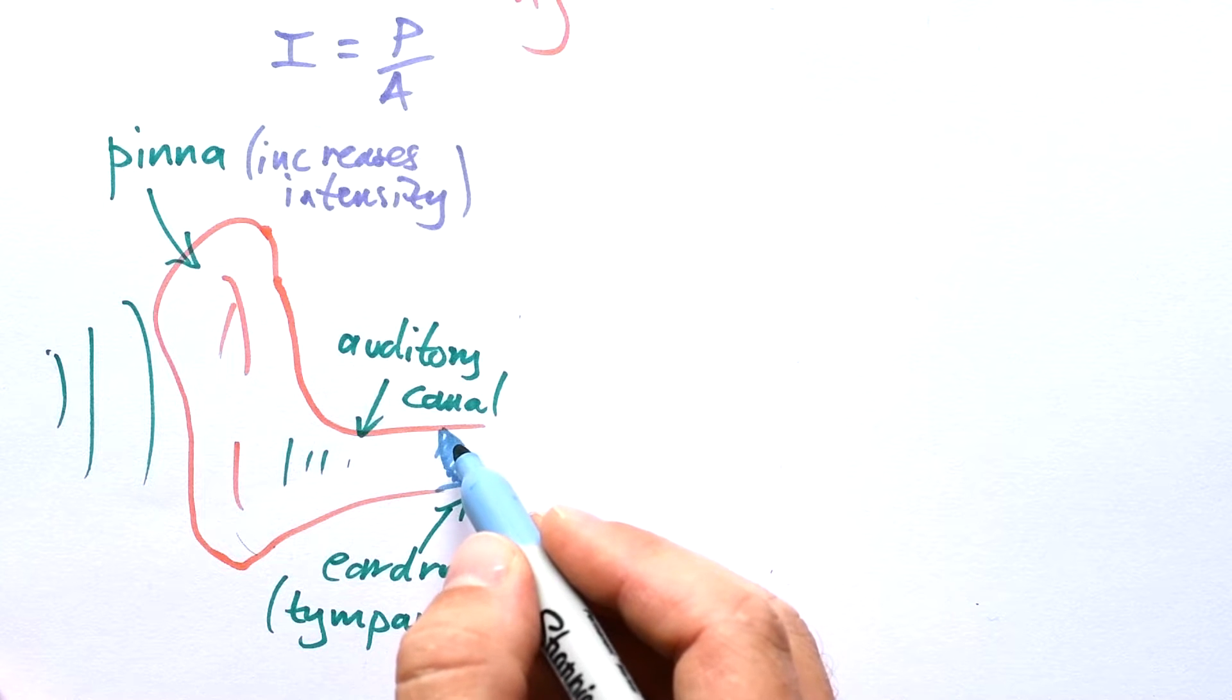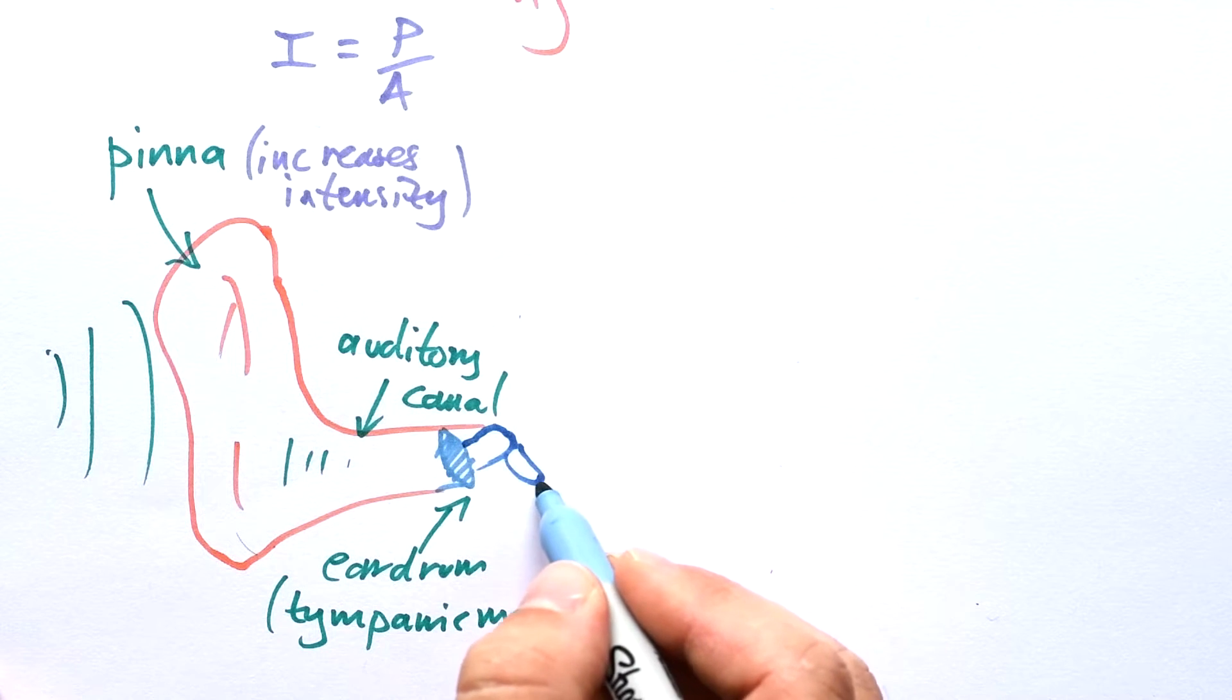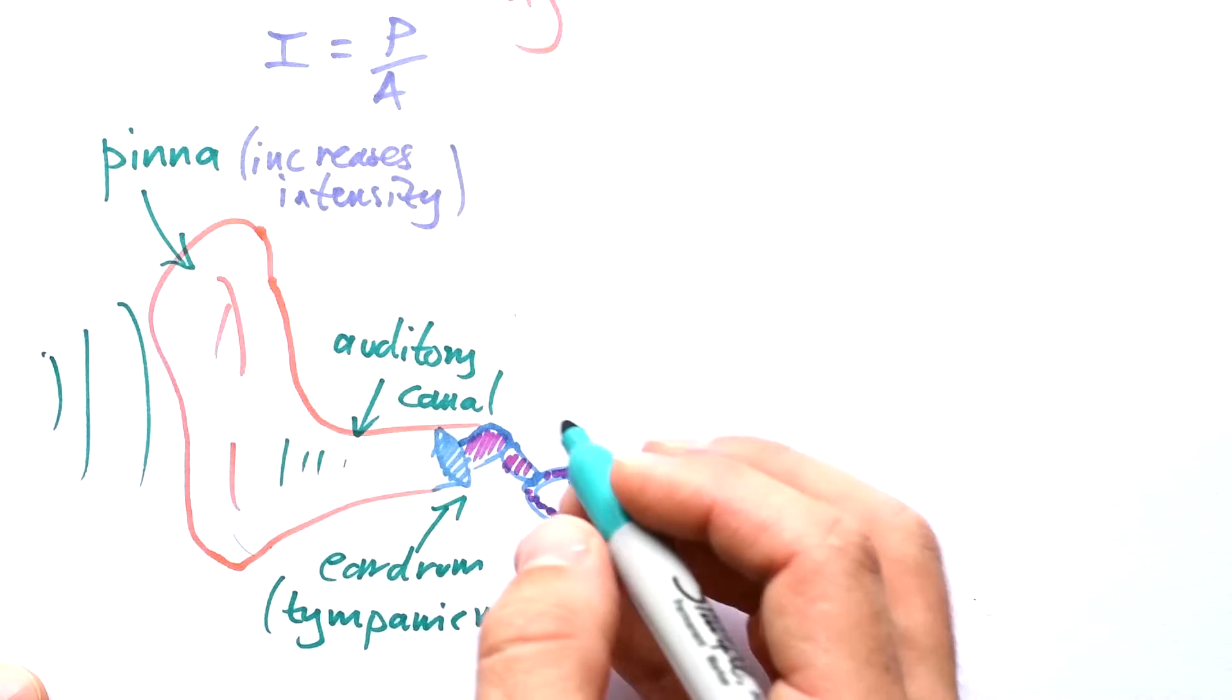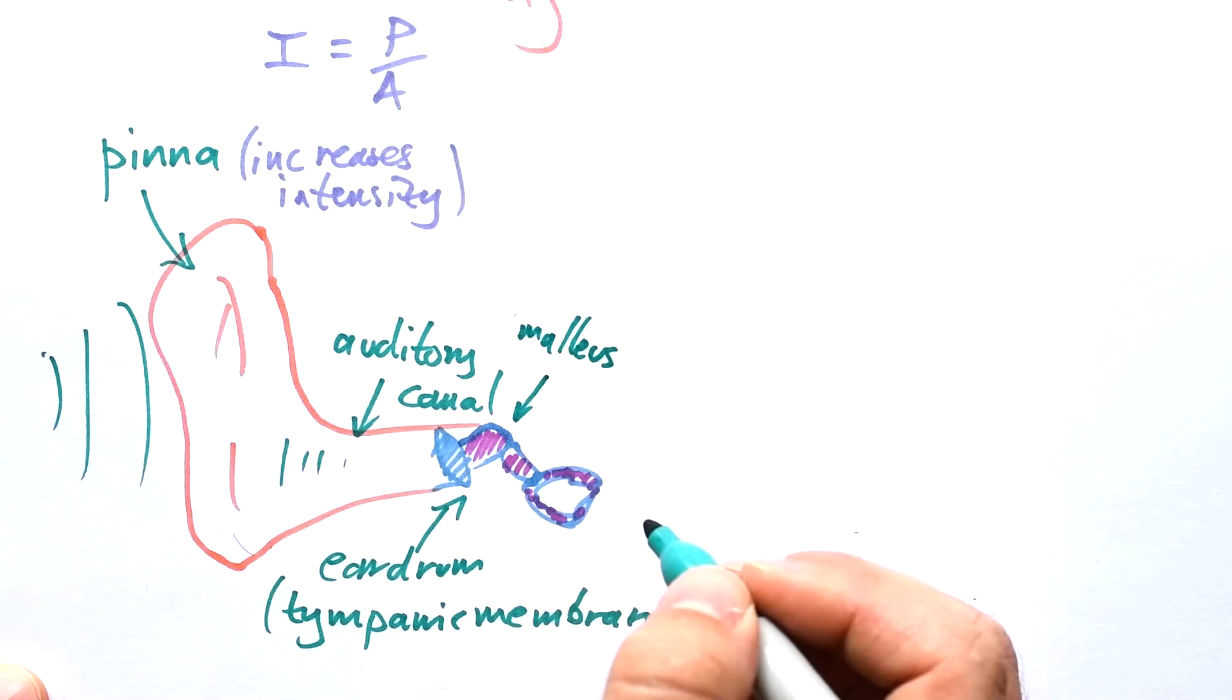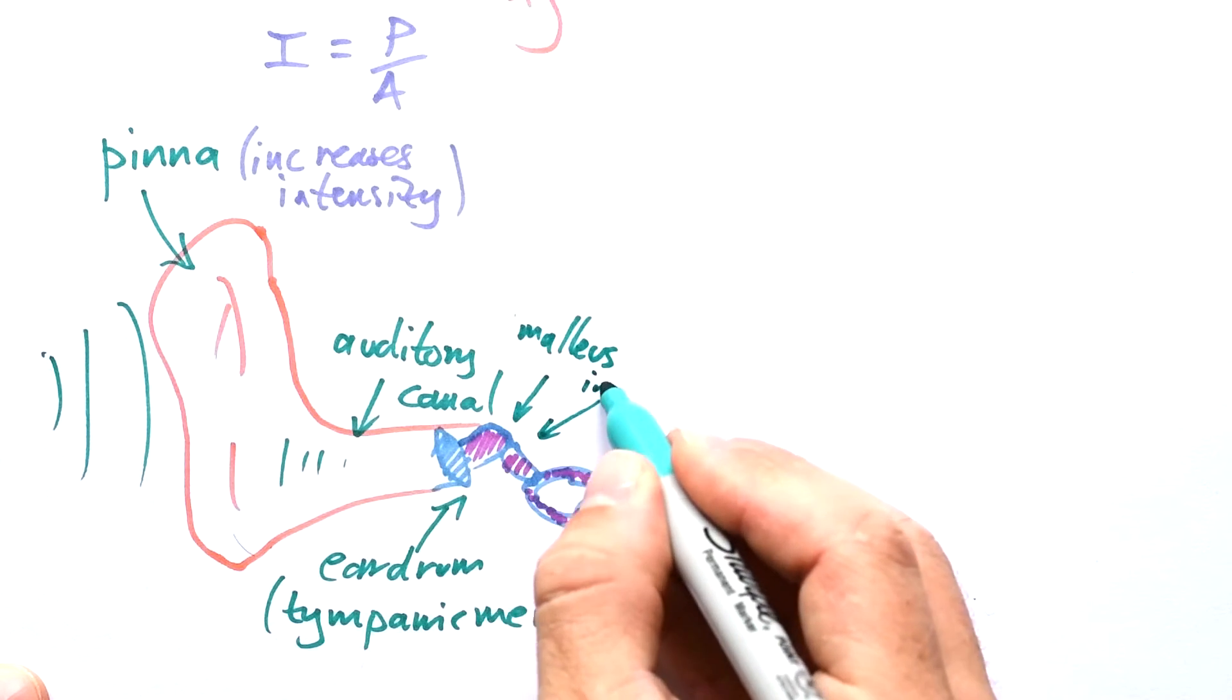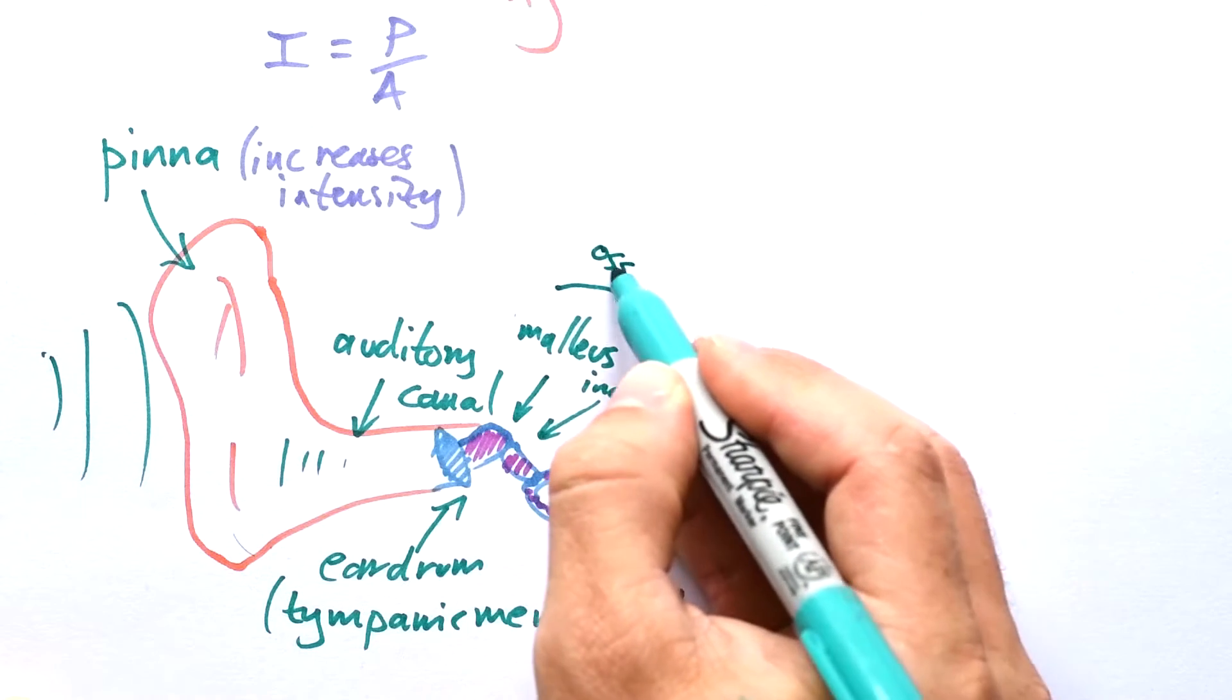Then we have three very small bones, they're incredibly small and very sensitive. You might have heard these called the hammer and stirrup. Let's give them their proper names: malleus, that's where the hammer comes from, mallet, incus, and then stapes. All together these three are called the ossicles.